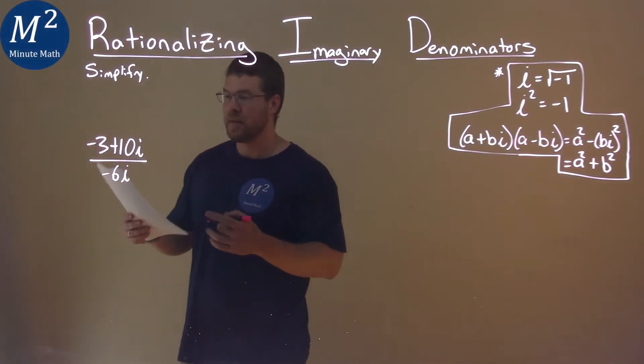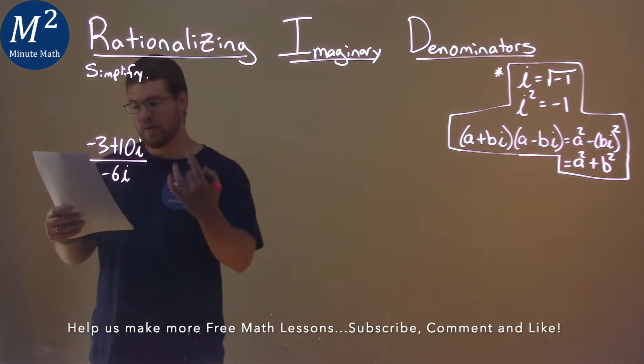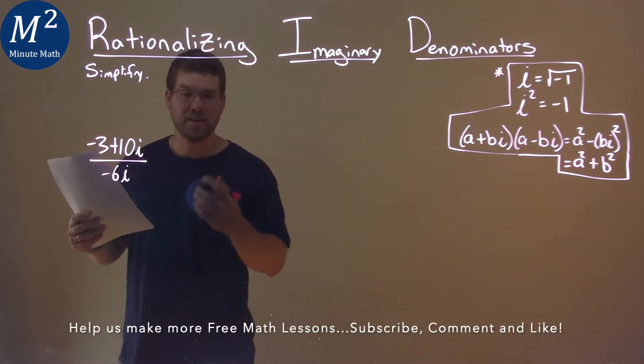We're given this problem right here: negative 3 plus 10i over negative 6i, and we gotta simplify.